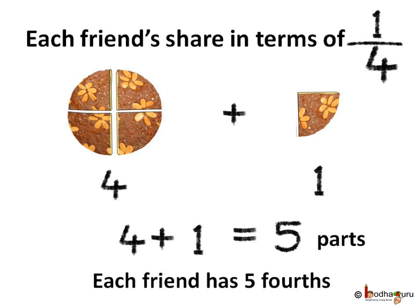Let us assume each whole cake was also cut into four equal parts. We can say each cake is made up of four one fourth parts. Correct? So one cake means four times fourths. So each friend has four plus one, that is five fourths.